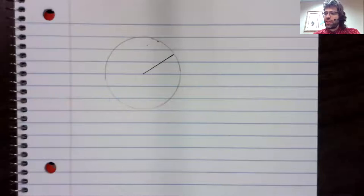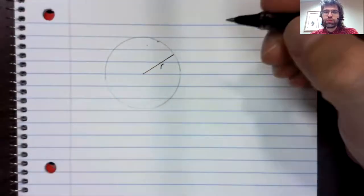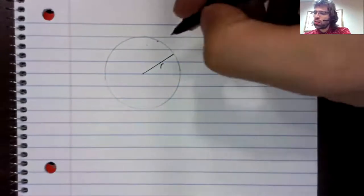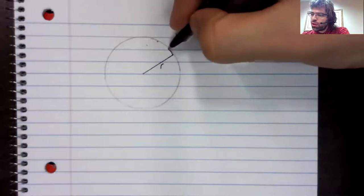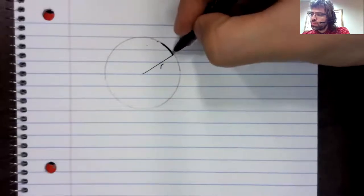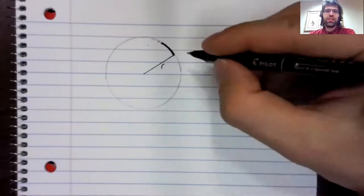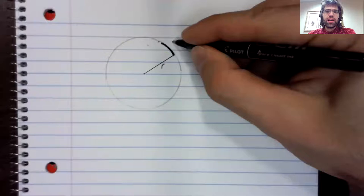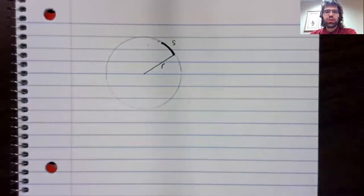Let's say that we have a circle with radius r, and we have an arc on the circle. Let's put it here for convenience. And we're looking at the length of this arc s.